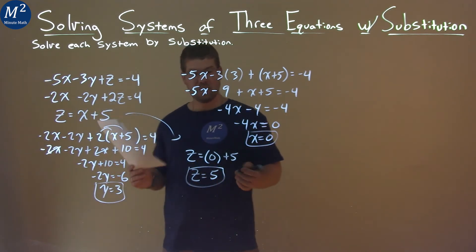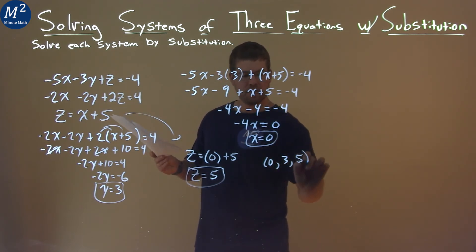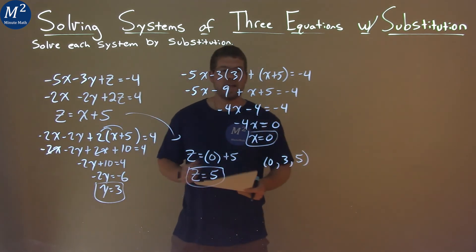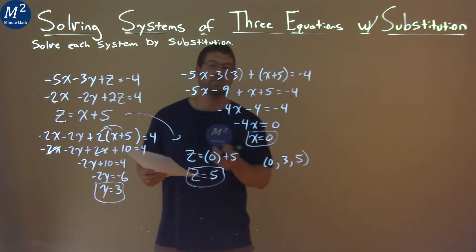We can write this as a coordinate point. We have all three down. 0, 3, 5, and that's our final answer. x is equal to 0, y is equal to 3, and z is equal to 5.